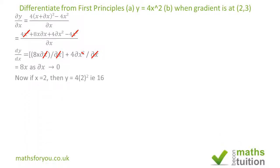For the second part, we're looking at the value of Y when X is 2. So the value of Y becomes 4 times 2 squared, which gives us 16.